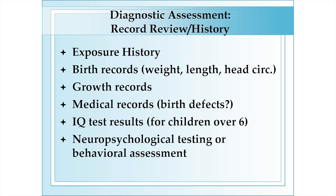The diagnostic assessment begins with a history, including a review of available records. First is to gather as much information as is available regarding the history of exposure to alcohol before birth. Birth records can be reviewed to record birth weight, length, and head circumference, and postnatal growth can be obtained from childhood growth records. Medical records can provide information about congenital anomalies that potentially could have been repaired before the child came under care, and results of cognitive assessments can also be very helpful.